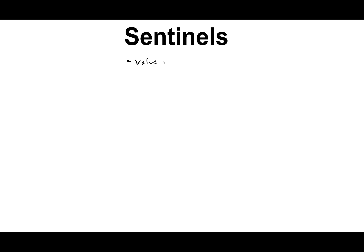Sentinels are a value in a list that indicates the end of data. For example, if you're entering test scores, you could ask the user to enter negative 999 to indicate that they're done, because negative 999 won't be confused with a valid test score. You just pick something that wouldn't be reasonable or valid for the data being entered.